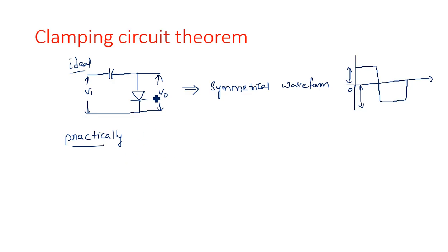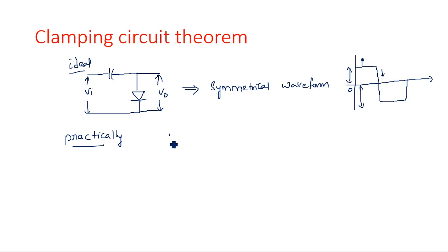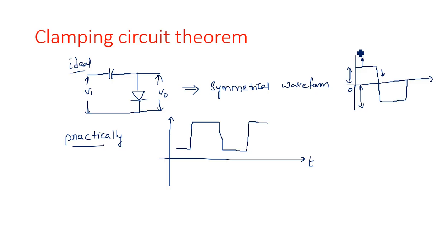For unsymmetrical signals this is not valid, because when the positive-going and negative-going signals are applied to the diode, the diode turns on during the positive peak as the capacitor is charging. Then as the input goes from positive to negative, the diode enters reverse bias, and the loop equation produces some level shifting. When the signal is completely shifted toward one side — as shown here — that is an unsymmetrical signal.